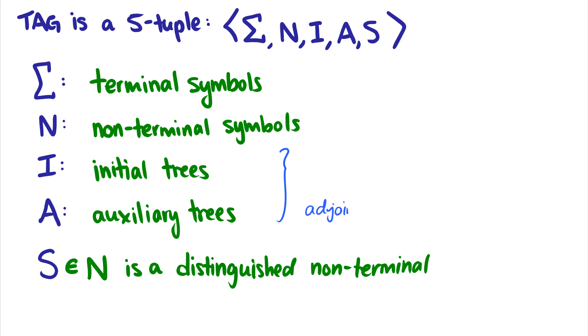So with auxiliary trees we usually adjoin them into other trees. So in other words, that C C_F tree we saw earlier is an auxiliary tree. Everything else was an initial tree. Then we have S in N, which is a distinguished non-terminal. We don't really need to worry too much about the formal definition here. What I really want to show are the operations.